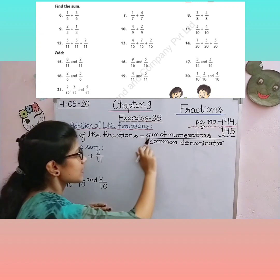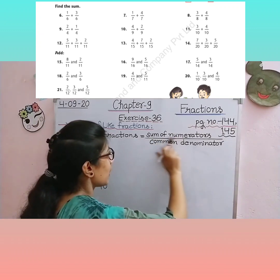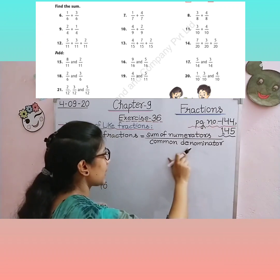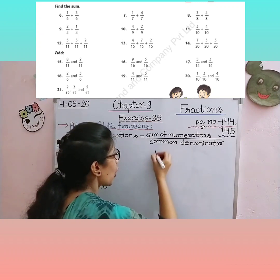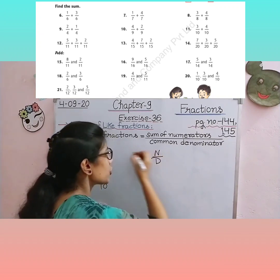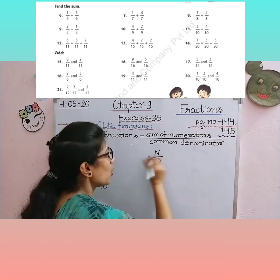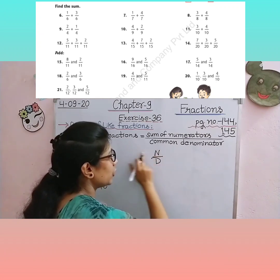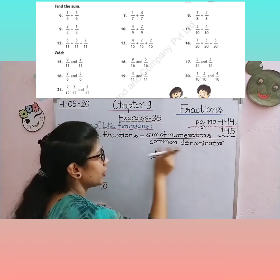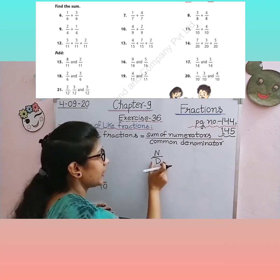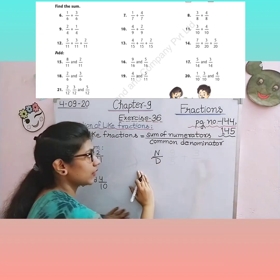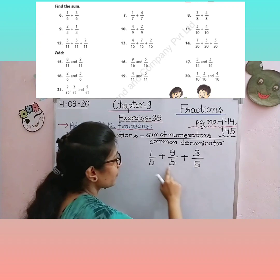Like fractions ka addition hum kaise find out karte hain? The formula is: sum of like fractions = sum of numerators upon common denominator. Hum fraction ko numerator aur denominator ke form mein likhte hain. Numerator mein hum kitne bhi fractions hoon un sab ka addition karte hain — numerators ko jodte hain. Denominator mein common denominator ek number hota hai.